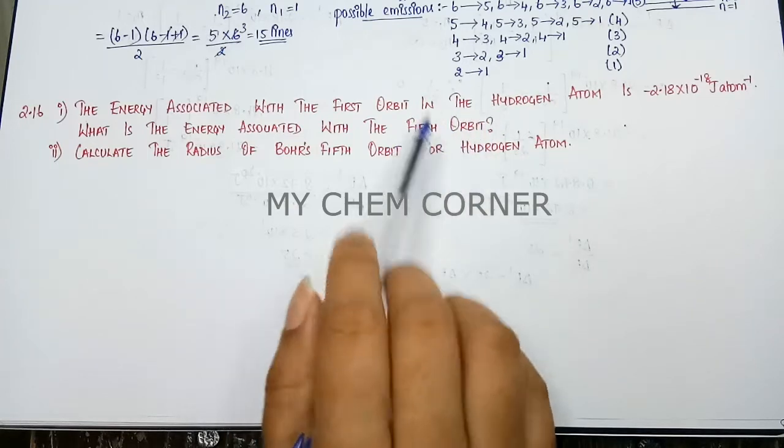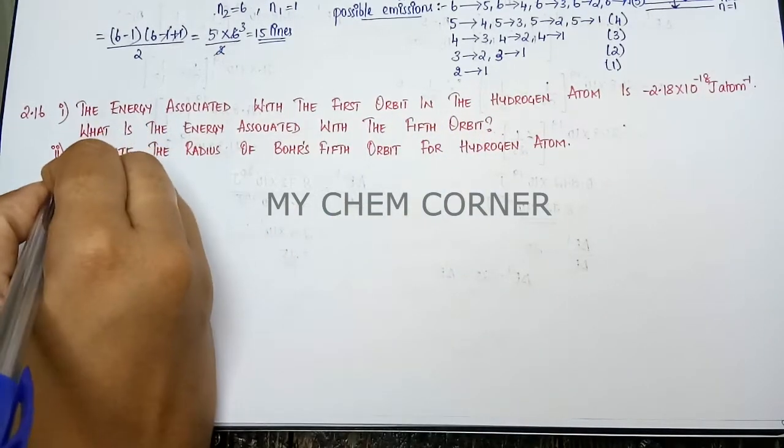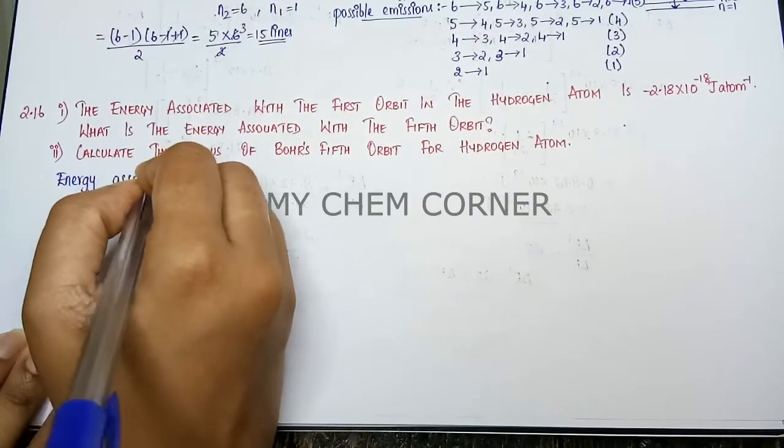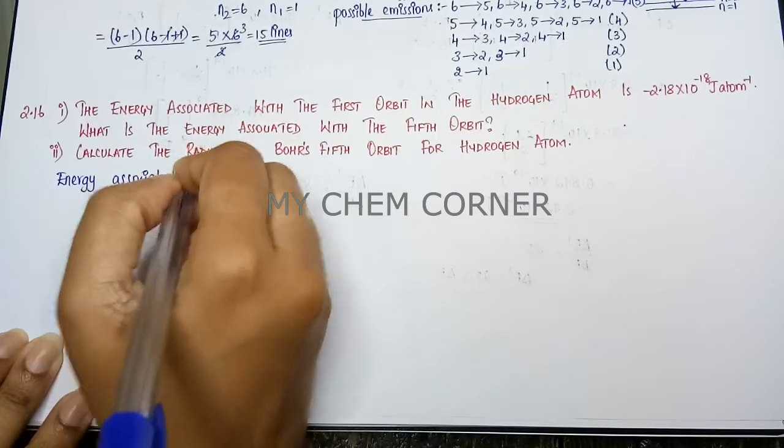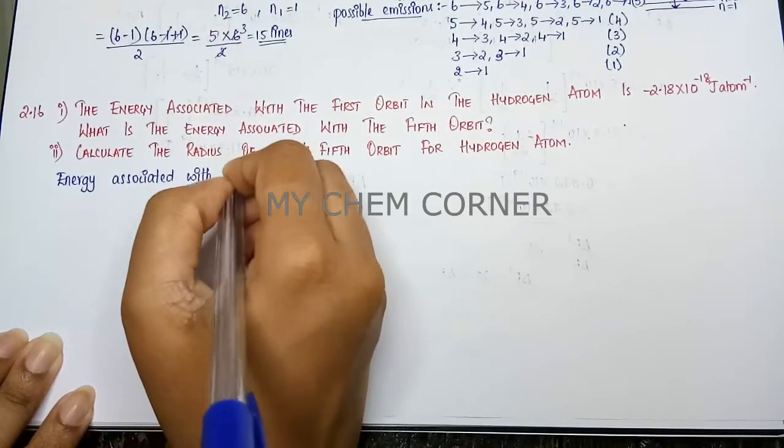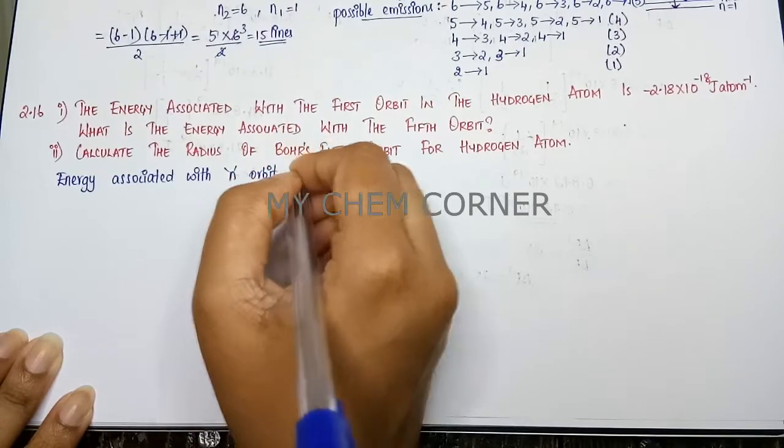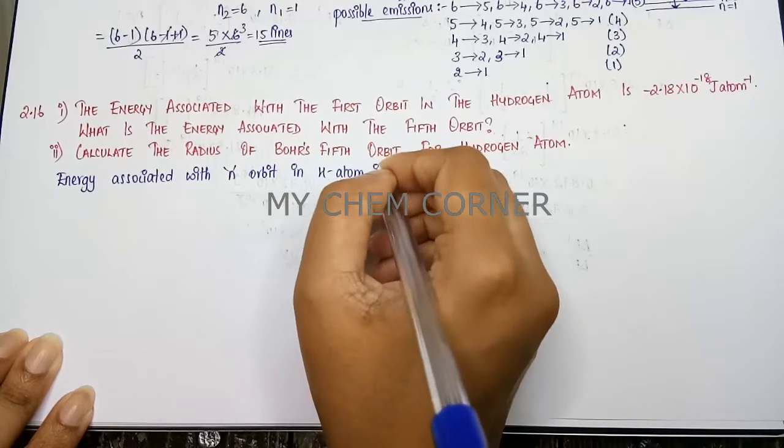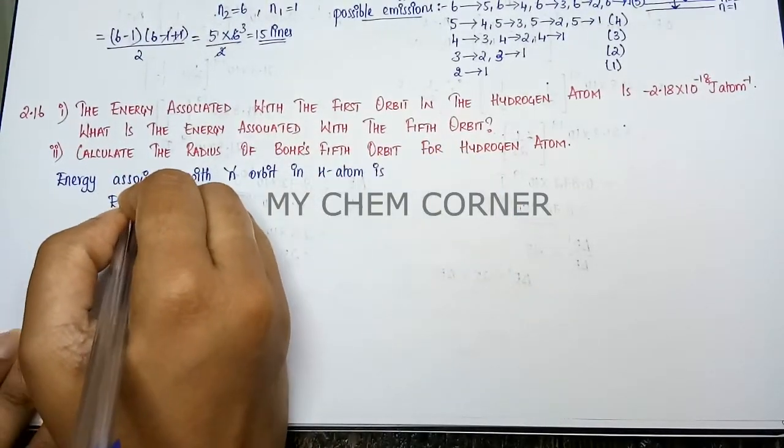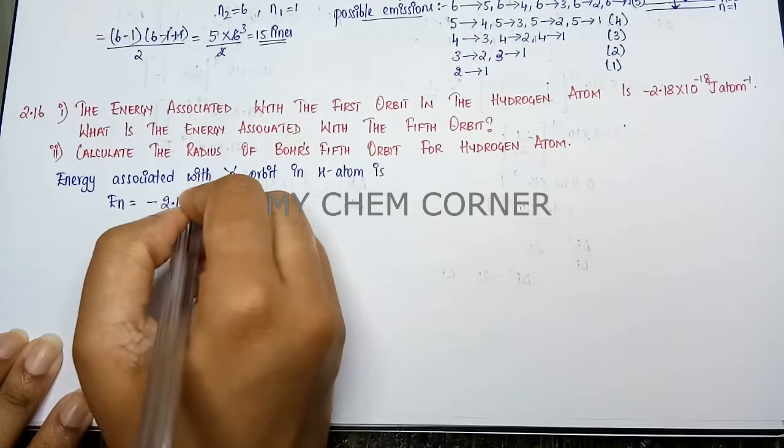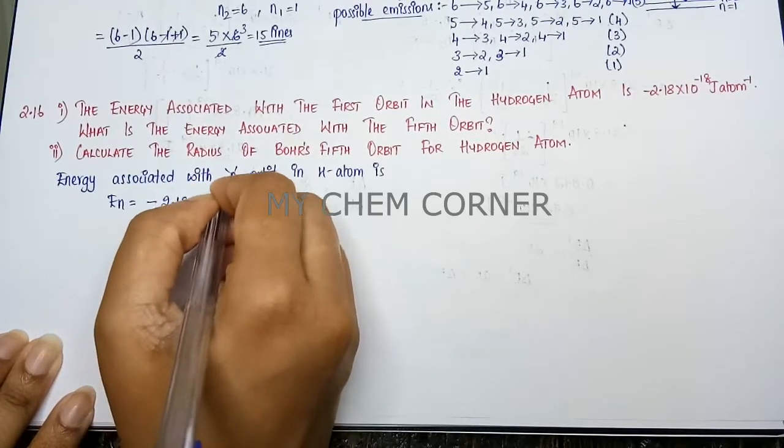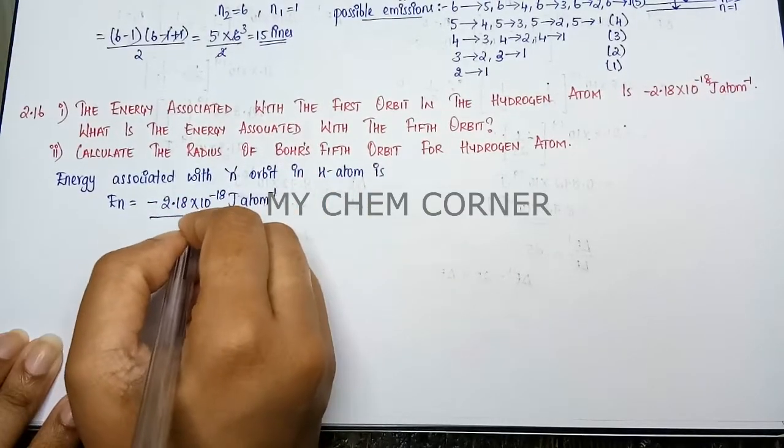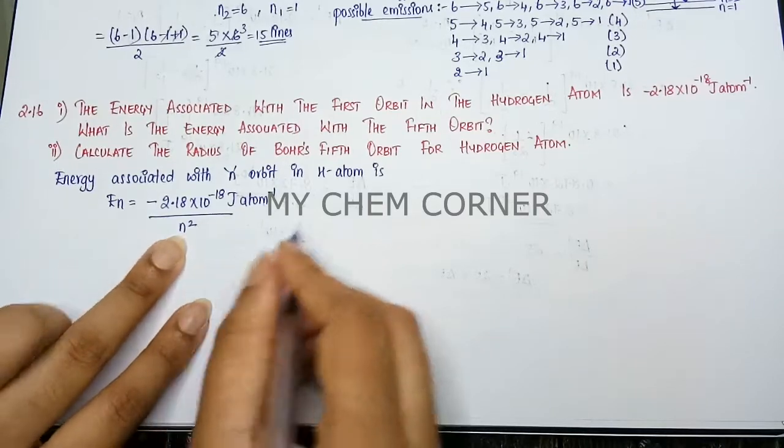So here we need to first write that energy associated with nth orbit in hydrogen atom is EN, n is equal to minus 2.18 times 10 to the power minus 18 joule per atom by n square.